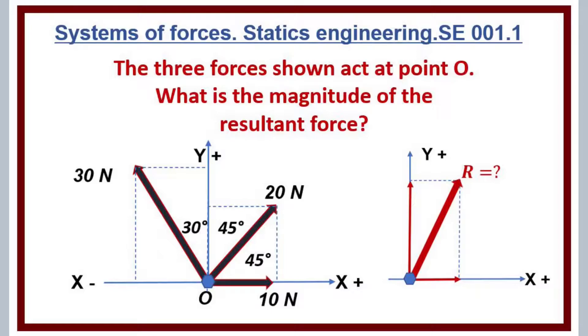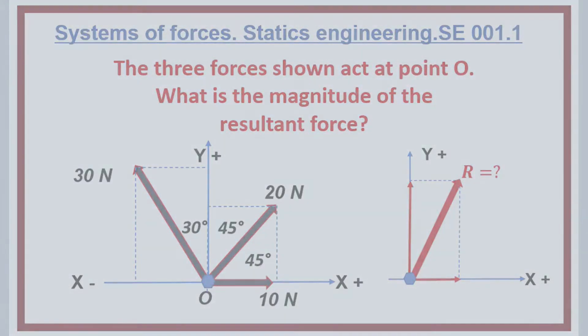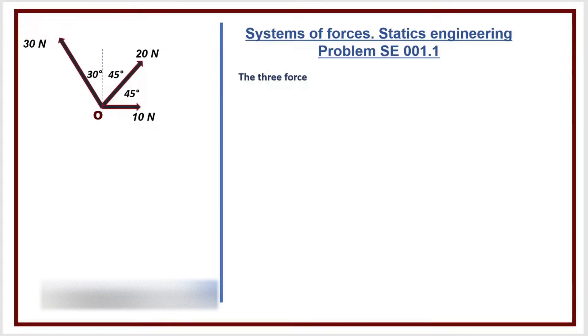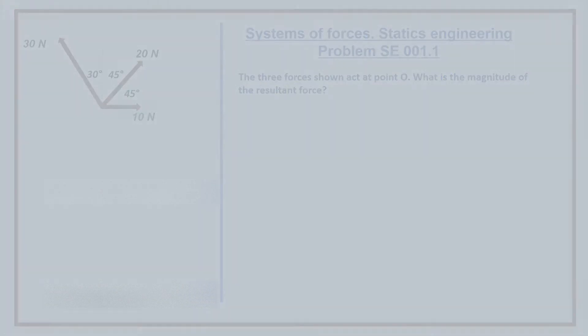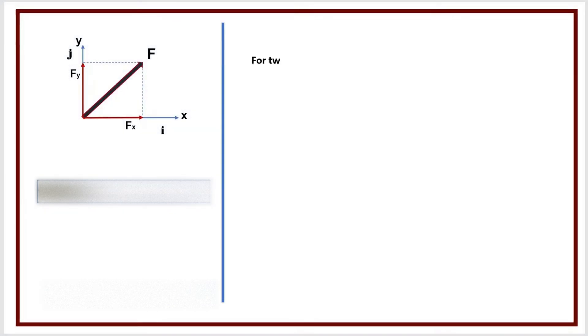Hi guys, this is a tutorial video about statics of engineering mechanics, systems of forces, statics engineering problem SE 001.1. The three forces shown act at point O. What is the magnitude of the resultant force? Solution: for two-dimensional coordinate force can be found from its direction cosines.